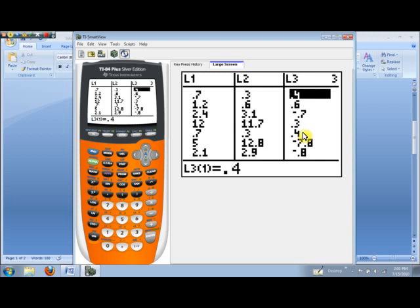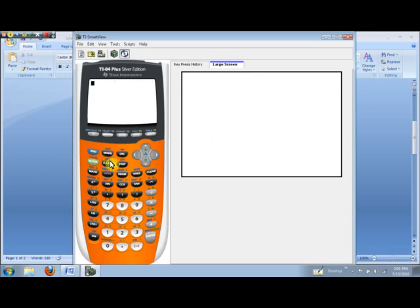So to do that, let me clear the screen. I'll hit second and quit, and then we'll go to our stat button, go over to calc, and we want one variable statistics, so I'll hit enter.